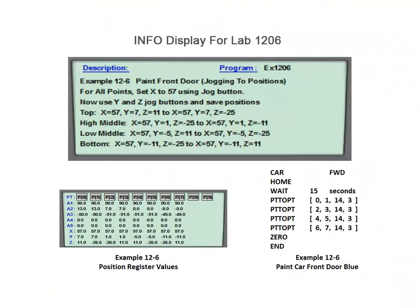The 60 new and improved simulation labs provided with the course content now include info display screens containing the lab objective as well as the steps to be performed to complete the desired task. All demonstration and interactive labs contain working programs and are designed to provide the student with an understanding of the basic programming techniques used in industrial robotics applications.